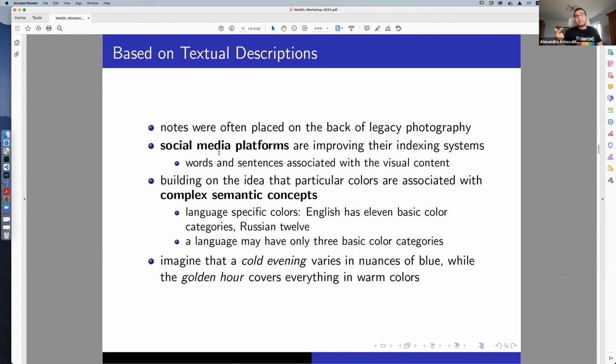Languages differ in terms of how many basic colors they have. Some languages have only three basic colors: red, dark or black, and white or bright. Imagine that you have to explain to someone that you saw a scene with only three colors. It's quite hard. Imagine that you have to colorize something using those colors.